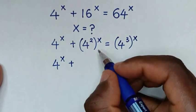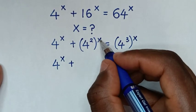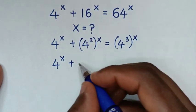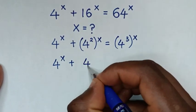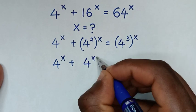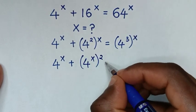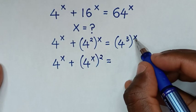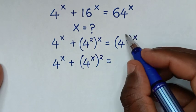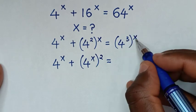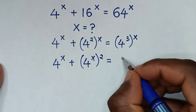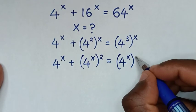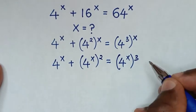Then in the next step, we take the power of x inside and power of 2 outside, so it will be 4 power of x, bracket power of 2, is equal to, and here we take power of x inside and power of 3 outside, so it will be 4 power of x, bracket power of 3.